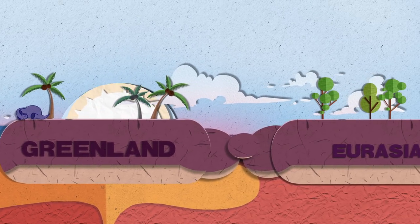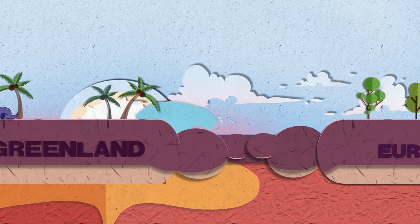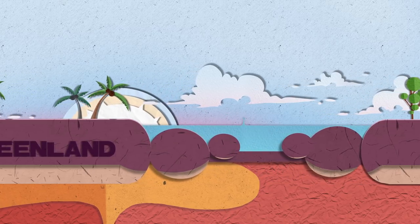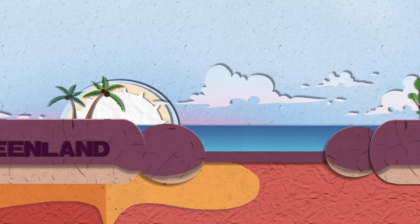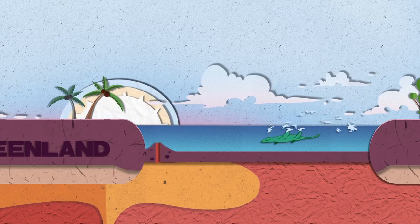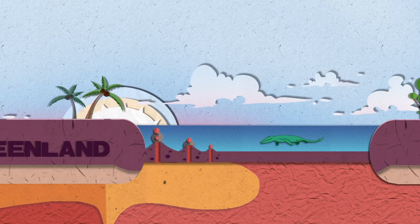Greenland then also starts moving west, splitting itself from Eurasia and moving over the hot spot. At this point, there is more volcanism on the eastern side of Greenland due to the hot spot.